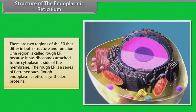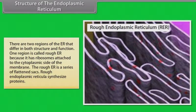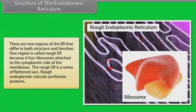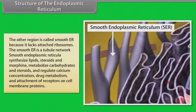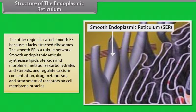There are two regions of the ER that differ in both structure and function. One region is called rough ER because it has ribosomes attached to the cytoplasmic side of the membrane; the rough ER is a series of flattened sacs that synthesize proteins. The other region is called smooth ER because it lacks attached ribosomes. Smooth ER is a tubule network that synthesizes lipids, steroids and morphine, metabolizes carbohydrates and steroids, and regulates calcium concentration, drug metabolism and attachment of receptors on cell membrane proteins.